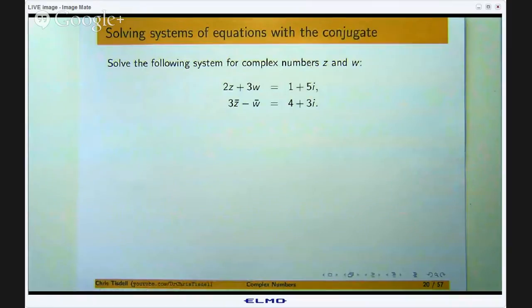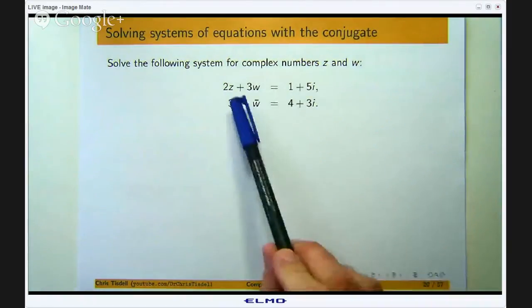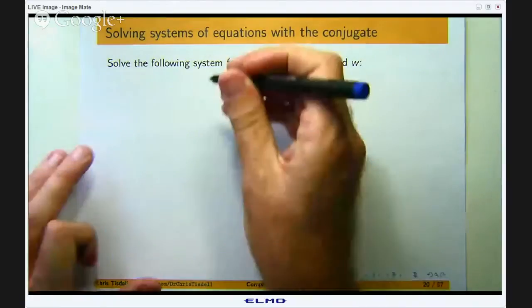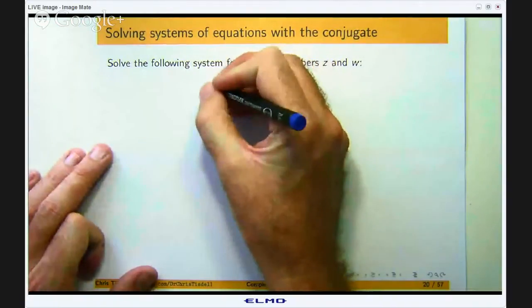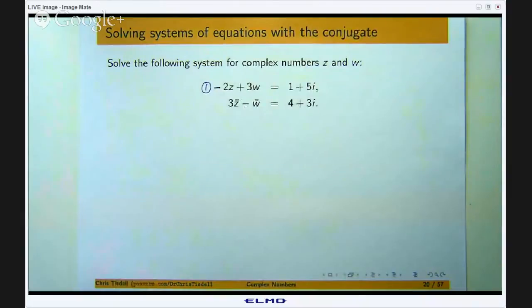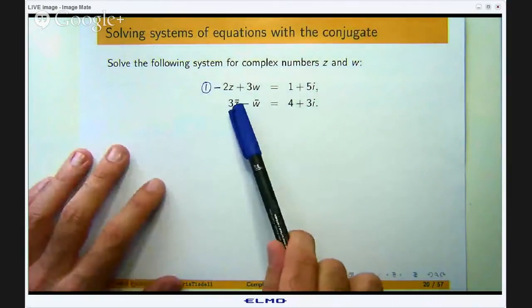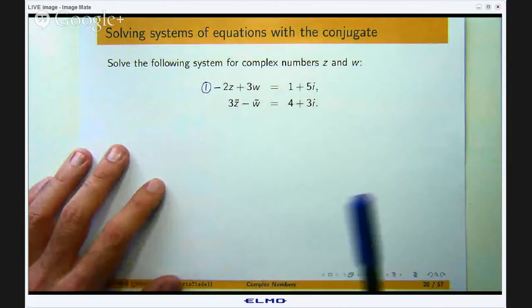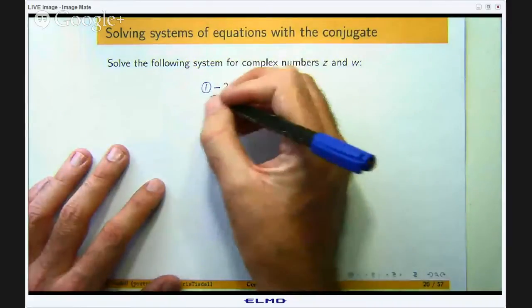Now it is a little bit tricky because when you look at them, the first equation has z and w in it but the second equation has z bar and w bar, the conjugates of z and w respectively.